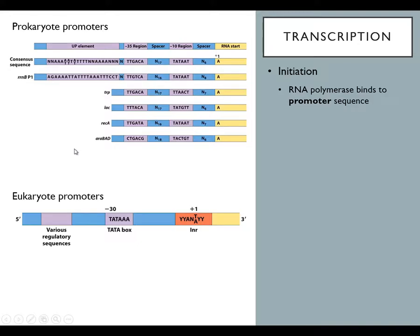RNA polymerase, like DNA polymerase, is not just one protein — it's a complex of multiple proteins. The assembly of those proteins requires transcription factors, and the transcription factors require promoter sequences. Every gene has its own unique promoter, but there are some similarities between promoters, especially within species. These are called consensus sequences. In prokaryotes like bacteria, most genes have regions 10 and 35 base pairs upstream from the transcription start site — called the minus 10 and minus 35 regions. In eukaryotes, most promoters have a region about 30 base pairs upstream that often contains the sequence TATA, called the TATA box.